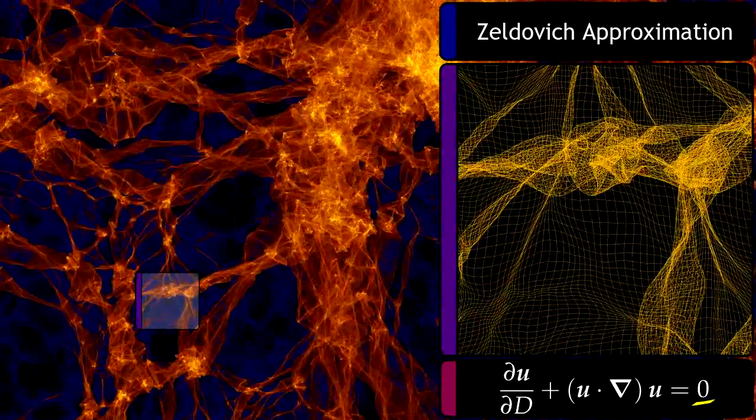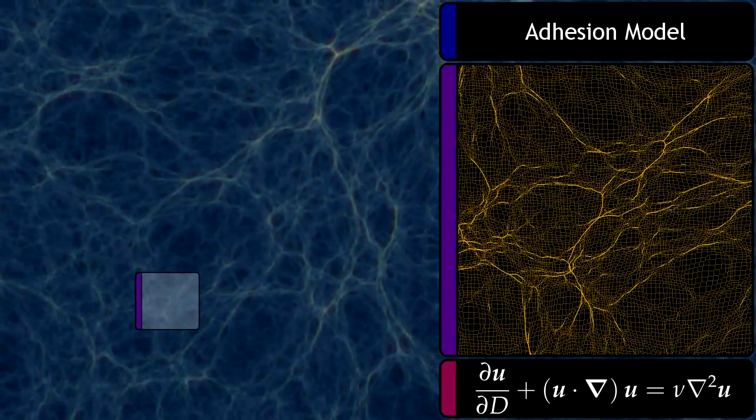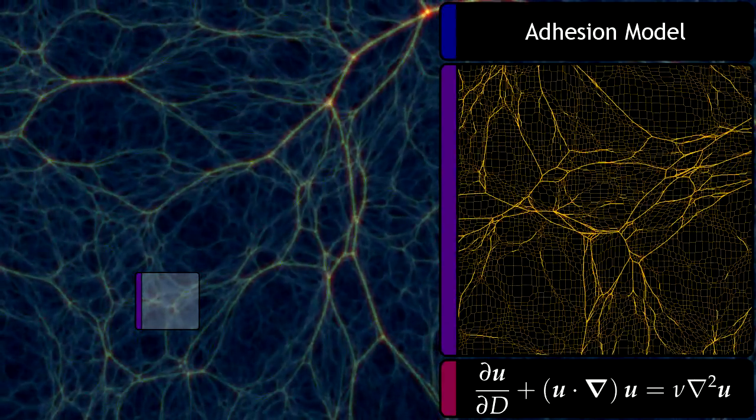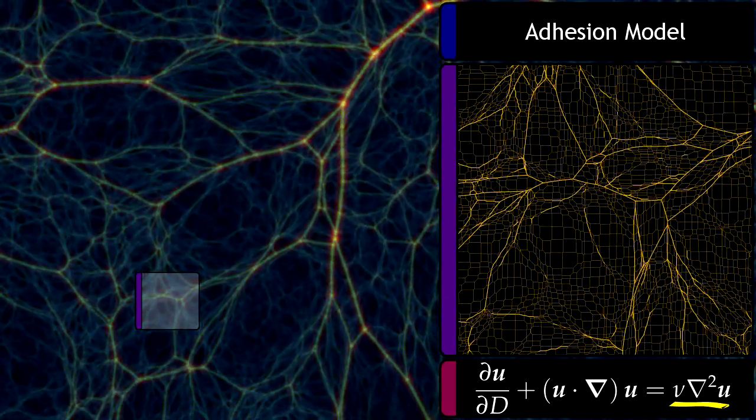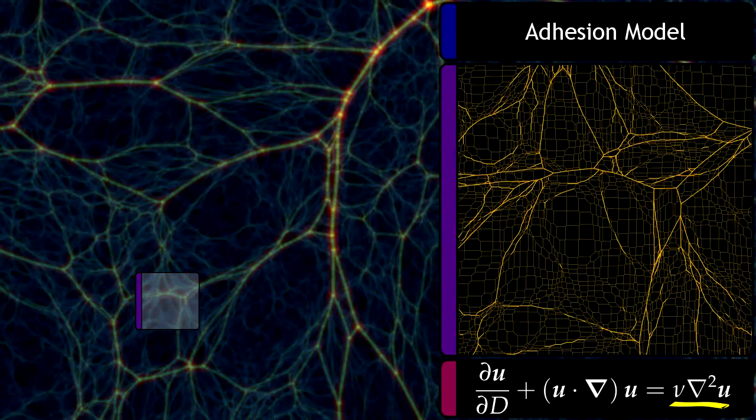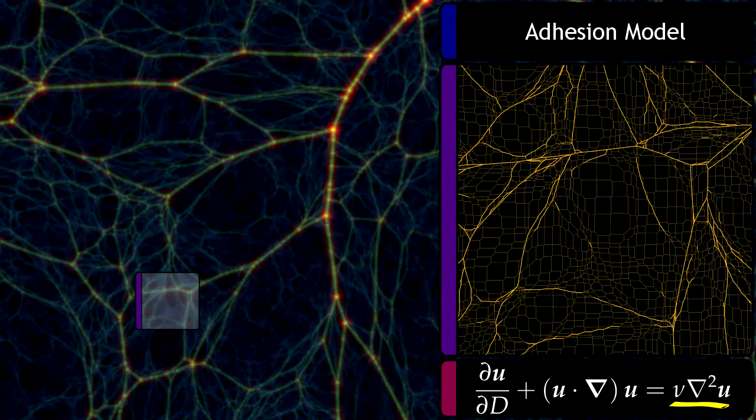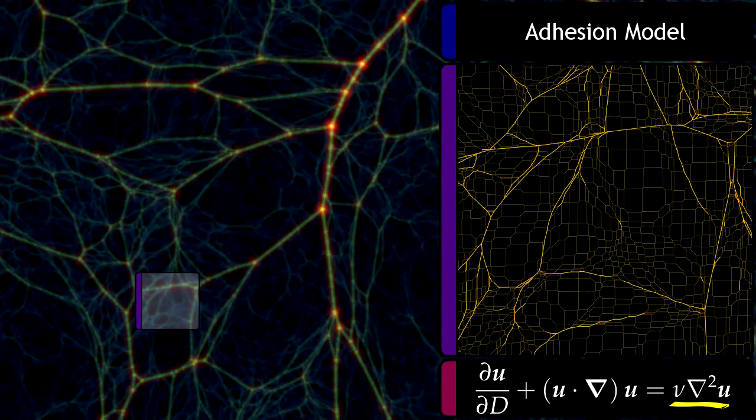An elegant extension of the Zeldovich approximation overcomes the lack of self-gravity. Gorbatov, Saichev, and Shandarin achieved this by simulating the effects of self-gravity with an artificial viscosity. The viscosity term is added as a source term to the Euler equation. The effect of the viscosity term is that it makes the matter sticky. As soon as matter streams reach walls and filaments, their inflow motion comes to a halt.